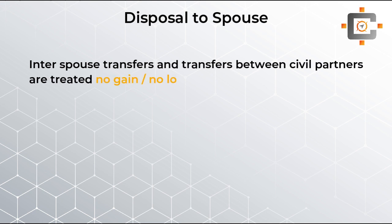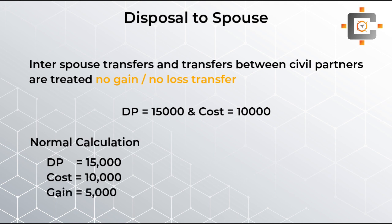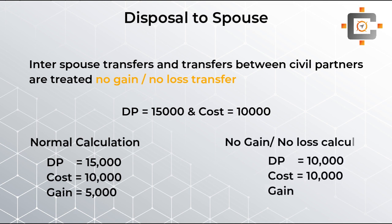Whenever you do a transaction with a spouse, the whole transaction is considered a no gain no loss transaction. This means after preparing the CGT pro forma, the gain or loss should be zero. Technically, that is only possible if the disposal proceeds and cost amount are equal — for example, if cost is £10,000, the disposal proceeds must also be £10,000.